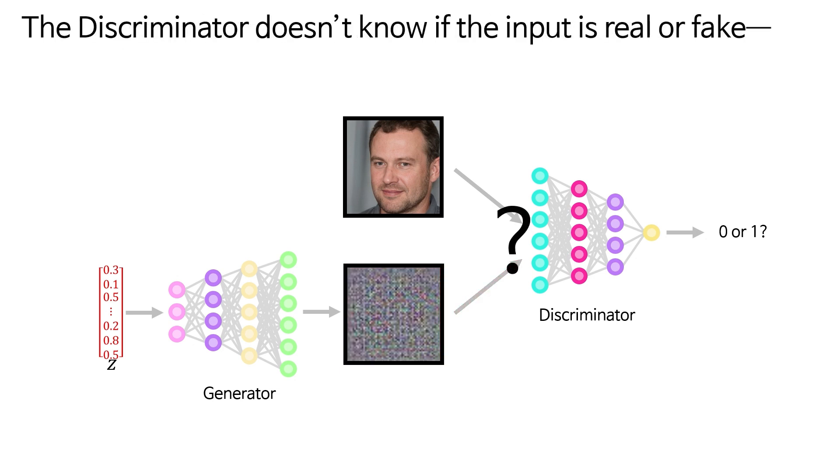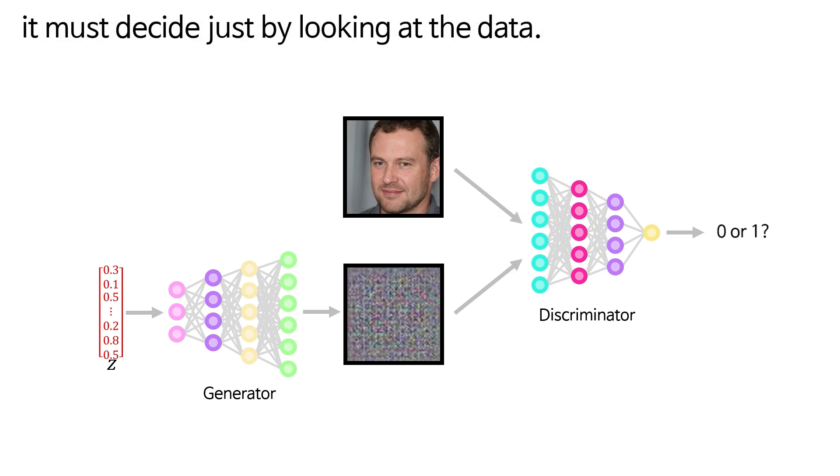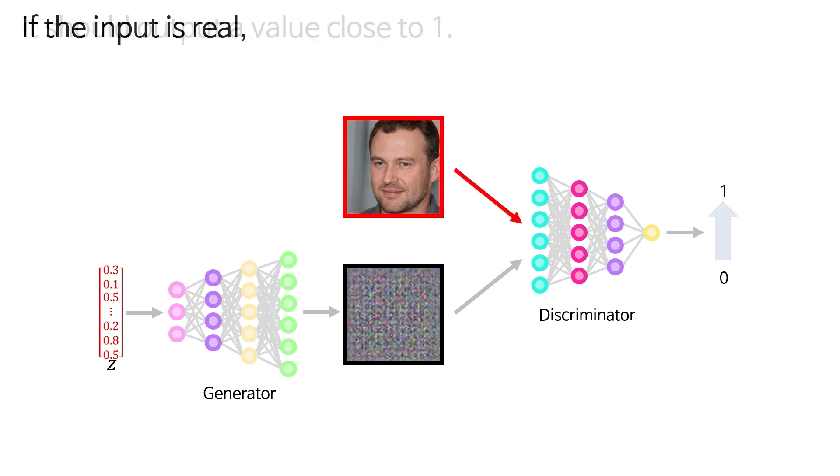The discriminator doesn't know if the input is real or fake. It must decide just by looking at the data. If the input is real, it should output a value close to 1.0. If it's fake, it should output a value close to 0.